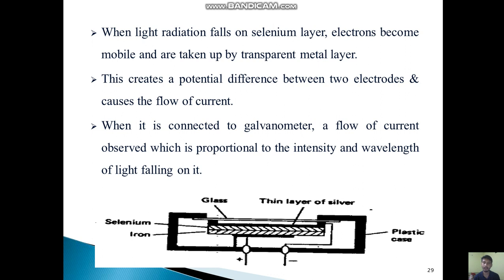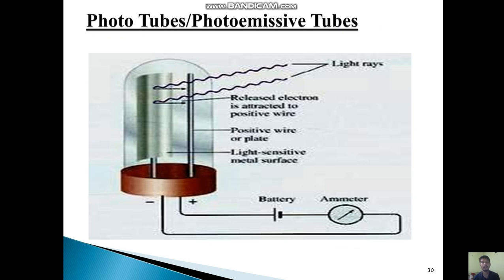When it is connected to a galvanometer, a flow of current is observed which is proportional to the intensity and wavelength of the light falling on it. Here you can see the photo with selenium in the middle, glass above, and in between a thin layer of silver. This is the diagram.